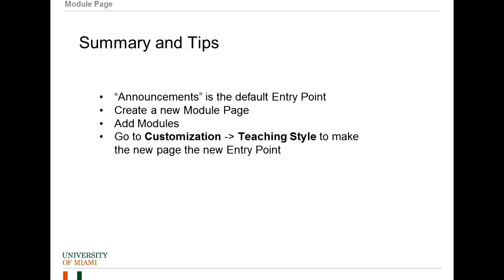To summarize: the announcements page is the default entry point when a new course is created. You can create a new module page in Blackboard, add the modules you would like to it, and then go to Customization > Teaching Style and make that new page the entry point for your course. And that is how we can work with the module page.